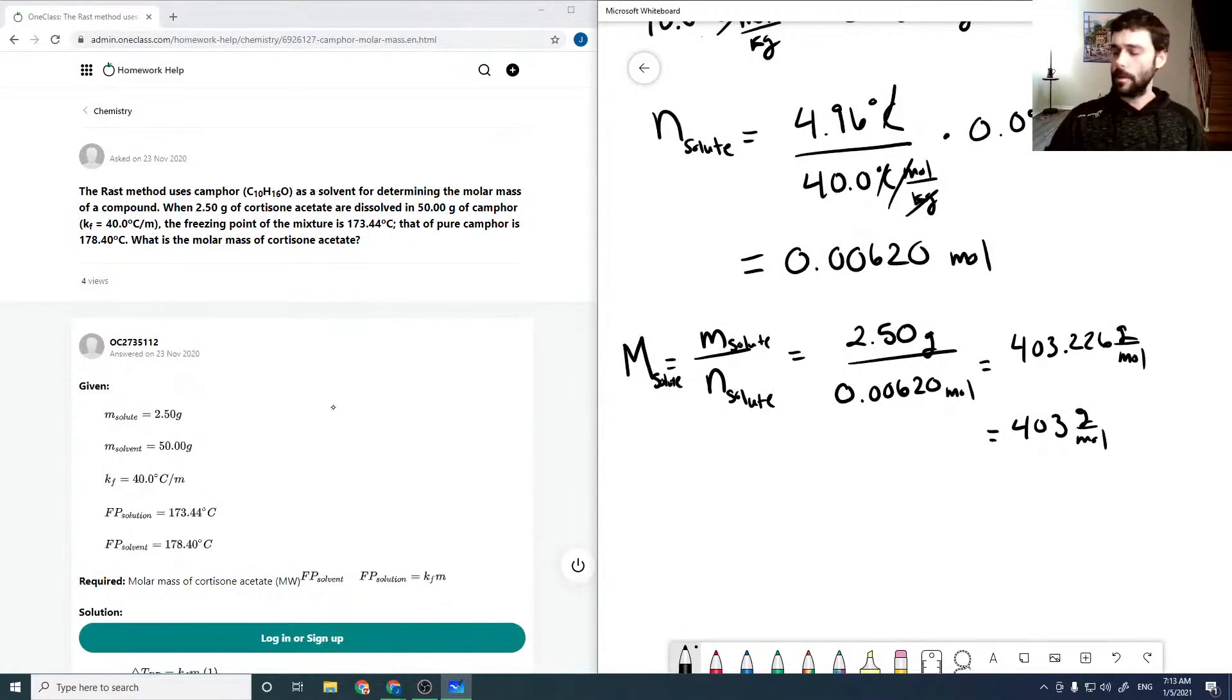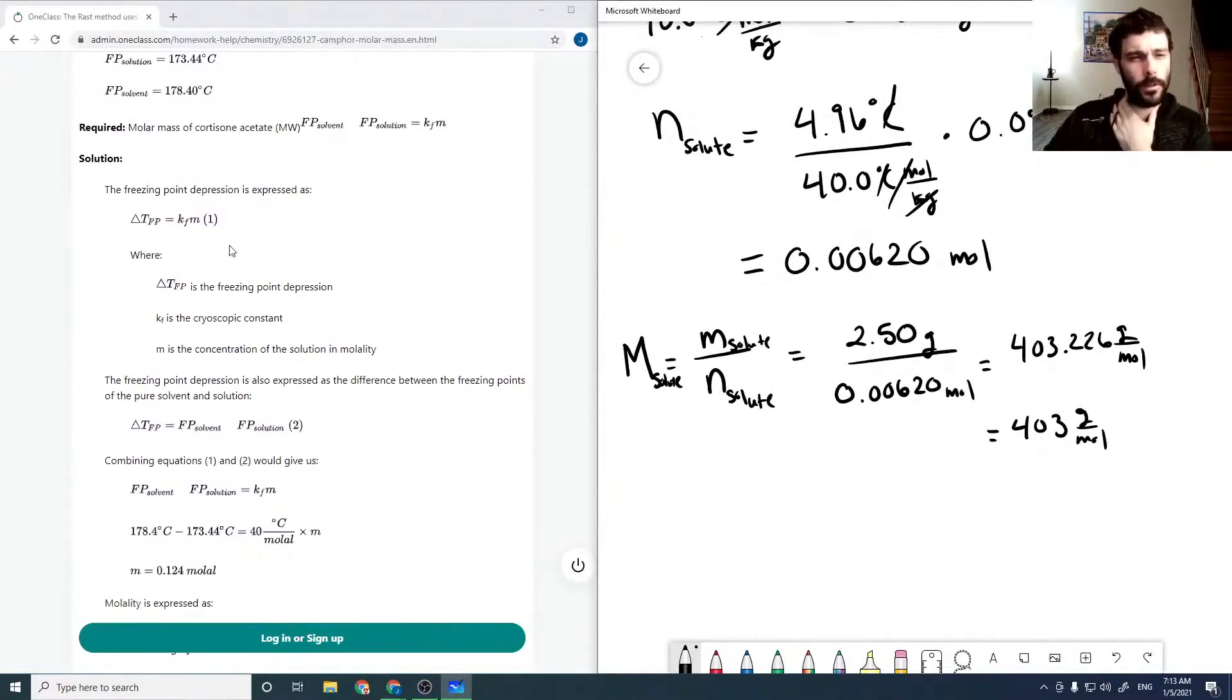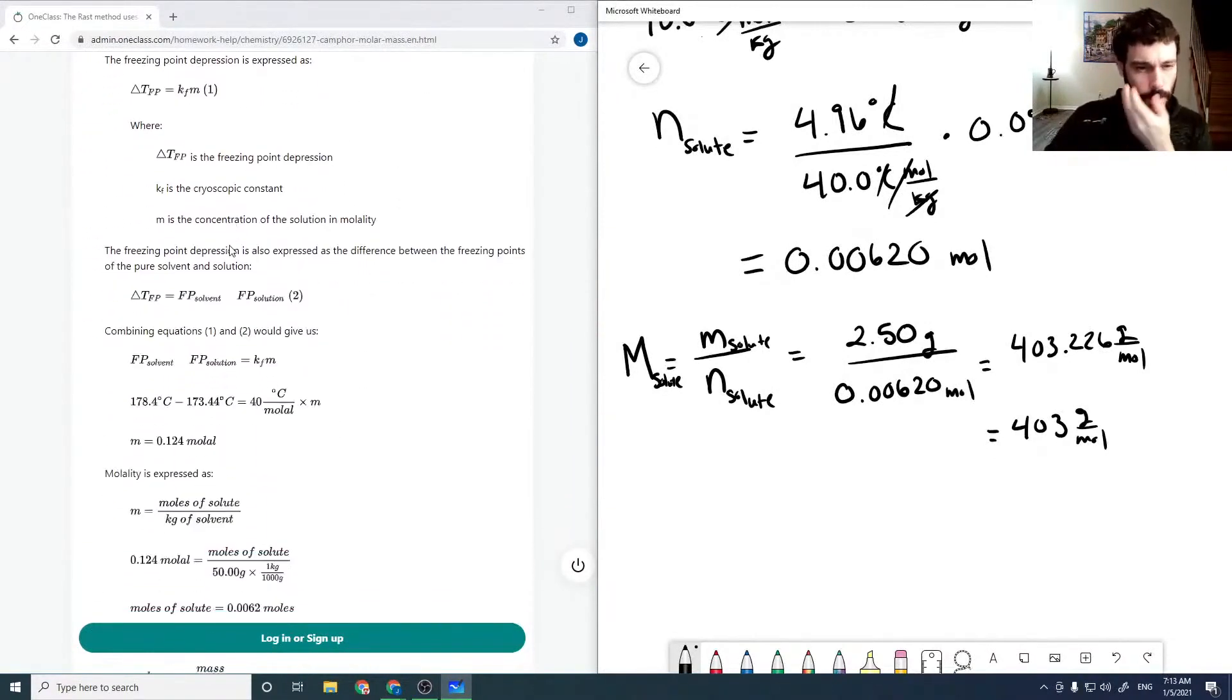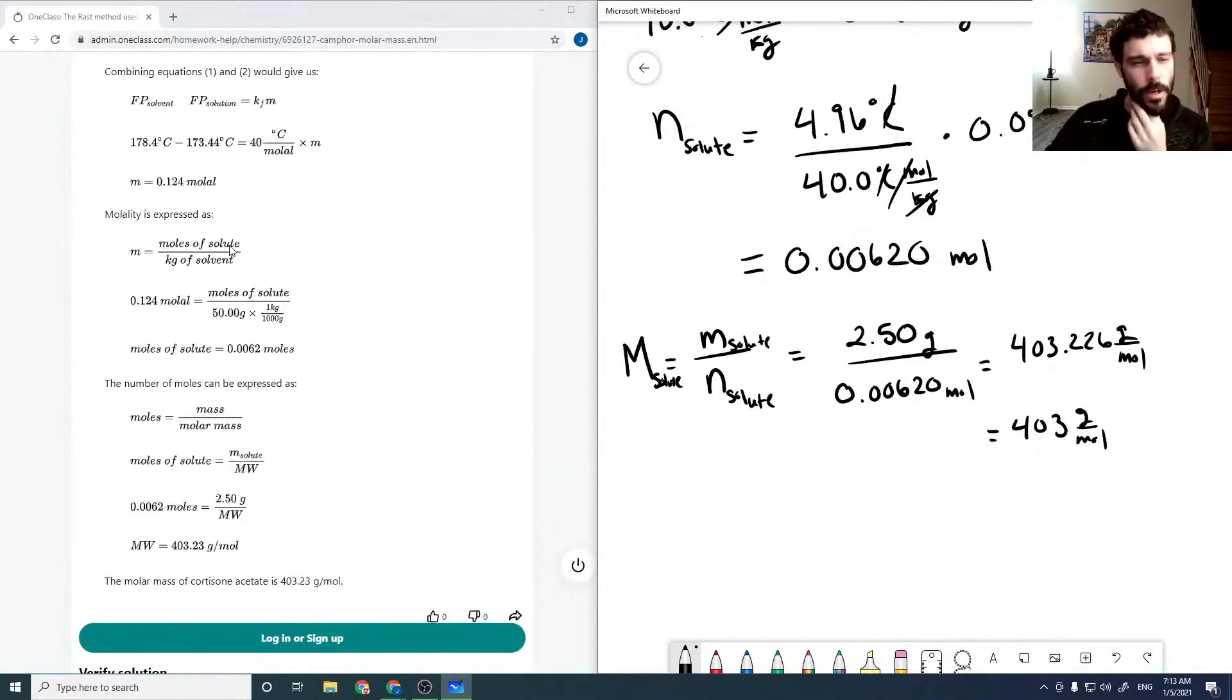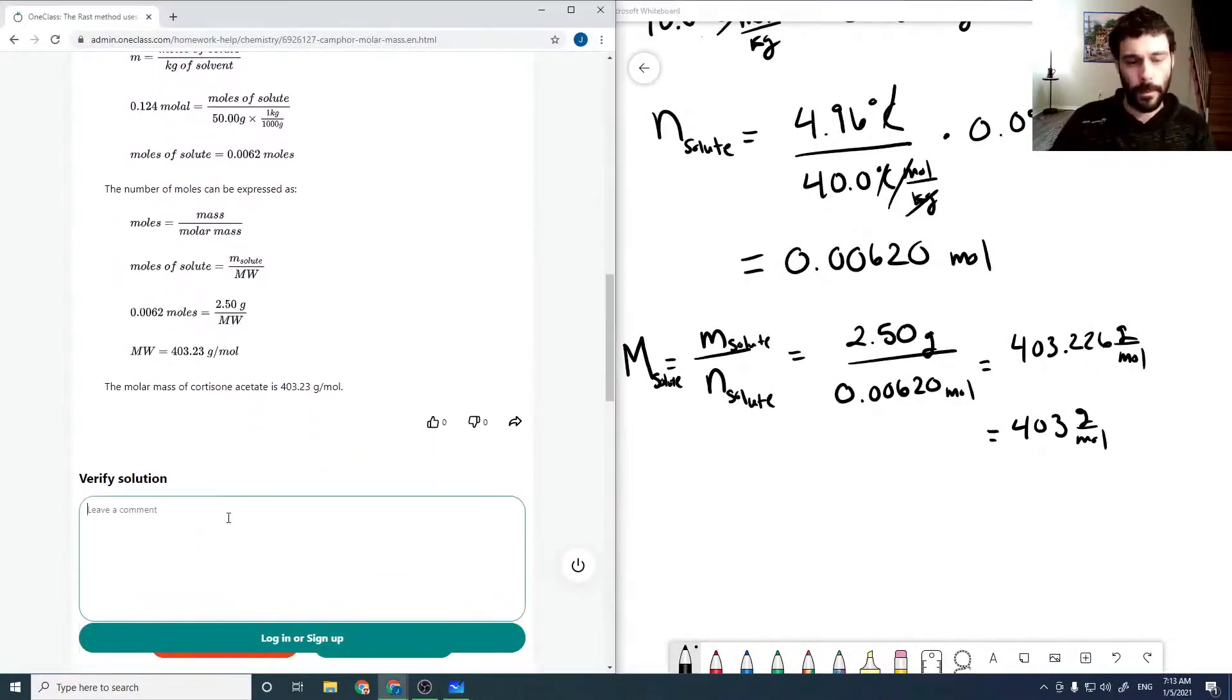So there's our molar mass for our cortisone acetate. If we check through the solution here, we can use the freezing point depression equation. And we get 403.23 grams per mole, or rounded for significant figures, 403. So that looks good.